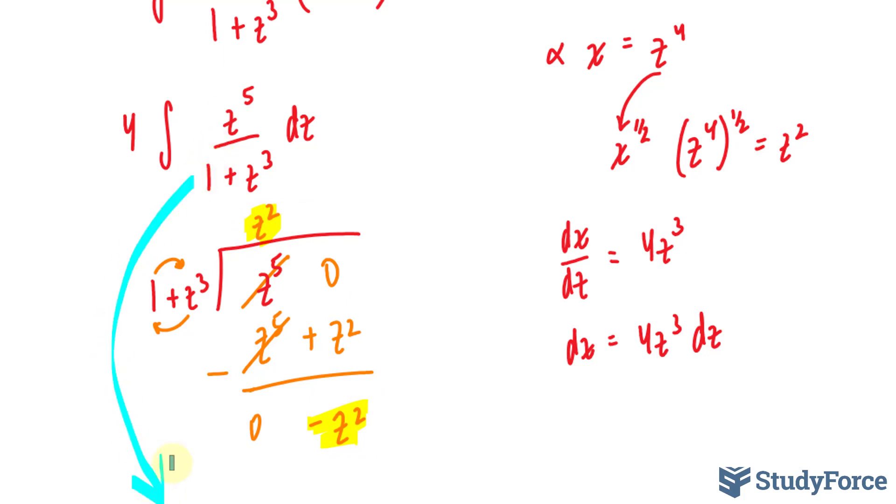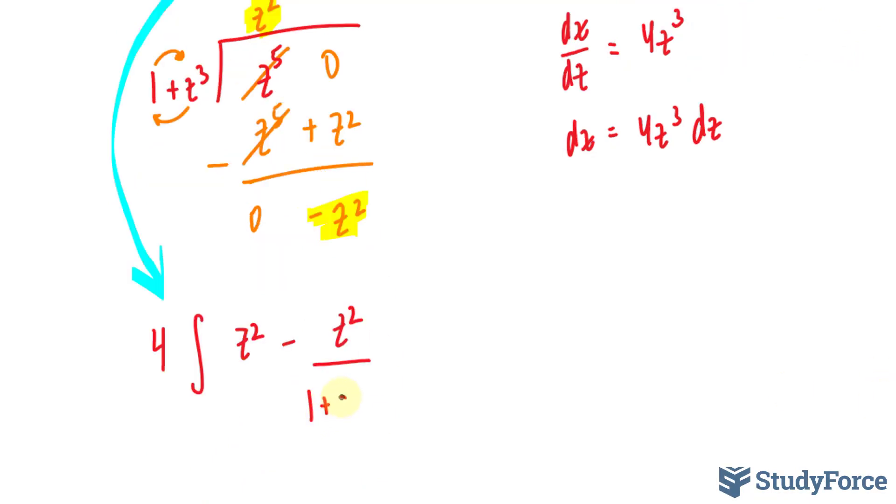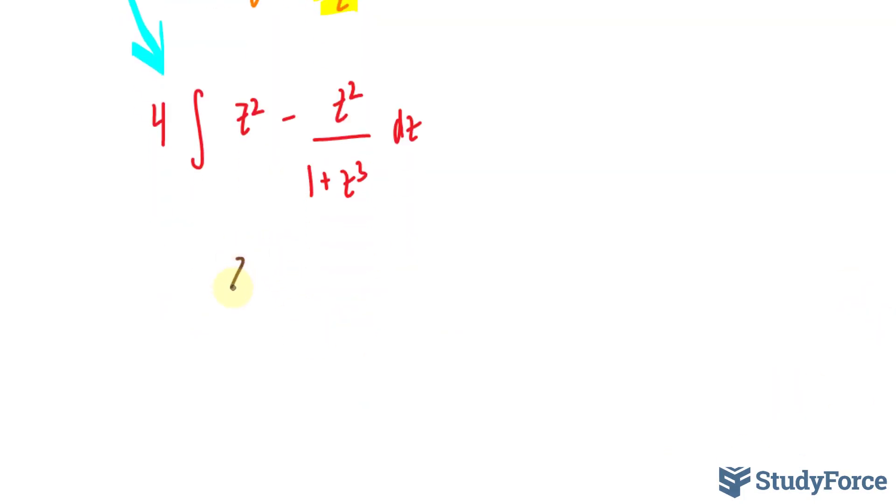And this is my quotient. So now I can break this down. I'll show my work over here. Now I can break this down into 4 times the integral of my quotient, which is z to the power of 2, minus z to the power of 2, my remainder, over 1 plus z to the power of 3 dz. Next, what I'll do is I'll take the integral of these terms individually. I'll need to do a substitution here, but this one is easy. z to the power of 2 becomes z to the power of 3 over 3. You just increase this by 1, and whatever the sum is, you put it underneath. And don't forget the 4 that's on the outside.